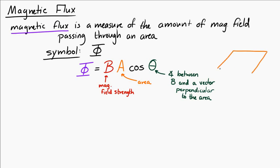So that's a little odd. I'm going to try to draw a diagram of what I mean here. So imagine we have this area, and there's a magnetic field passing through this area. Theta, again, is the angle between the magnetic field and a vector perpendicular to the area.